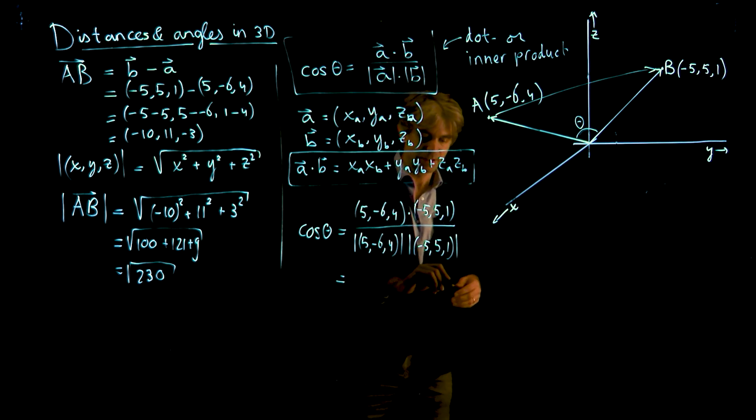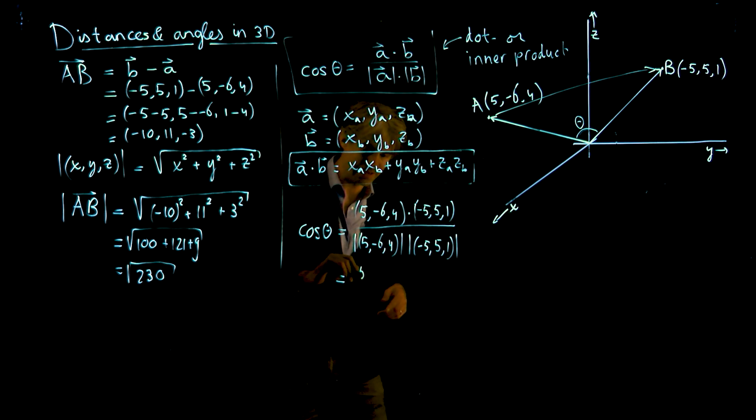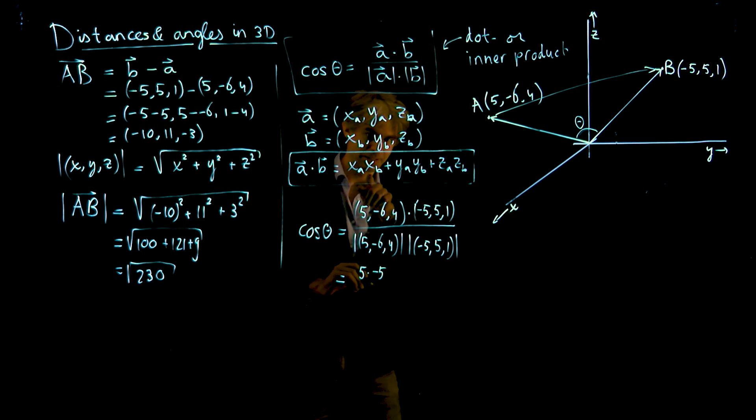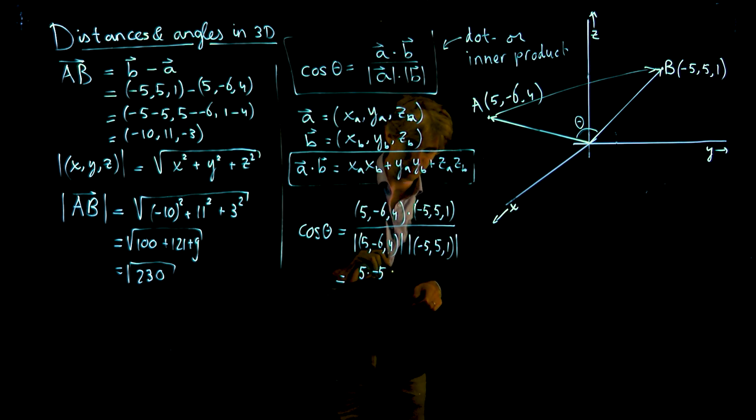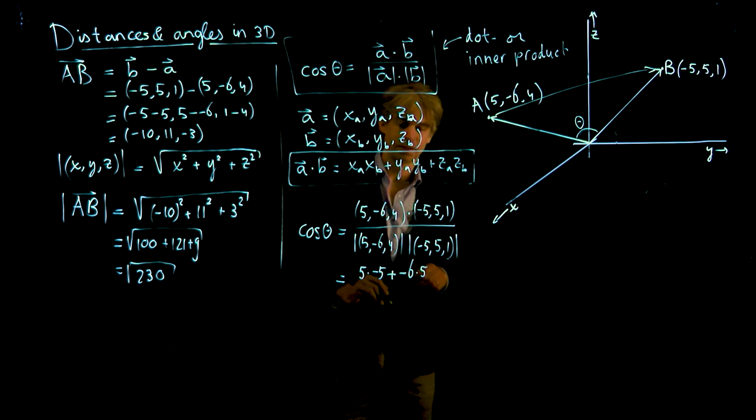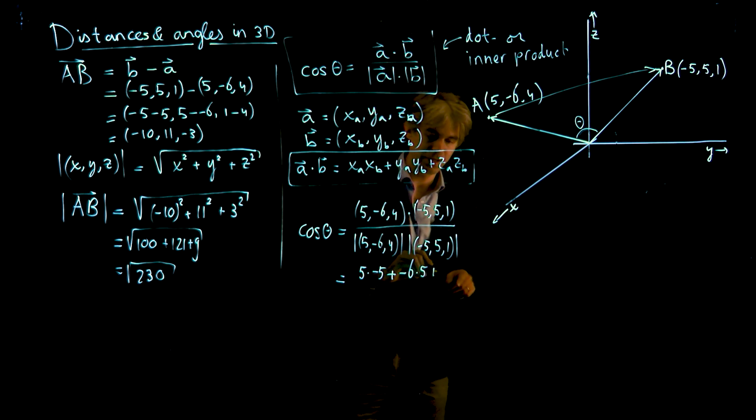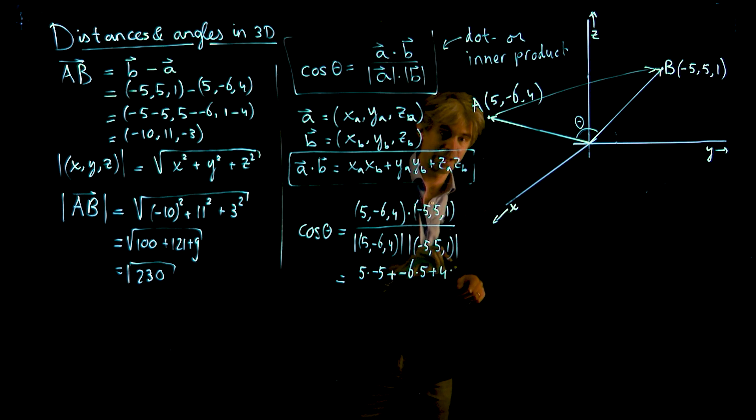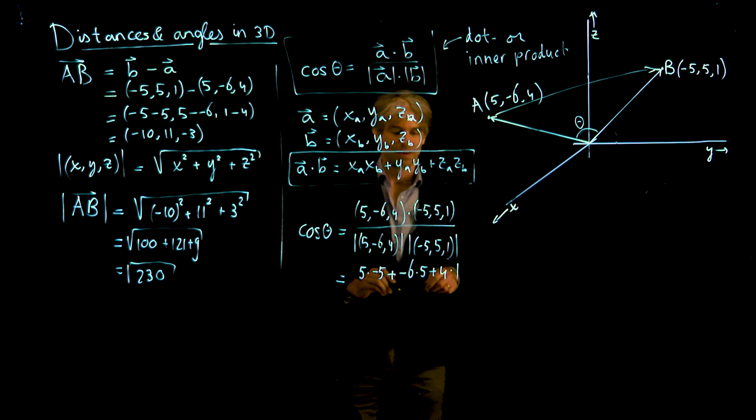In the numerator here, I get 5 times minus 5, that's what we have to do. Then this times this one, plus minus 6 times 5. And then the last one, plus 4 times 1.